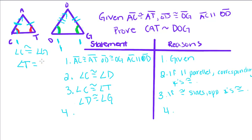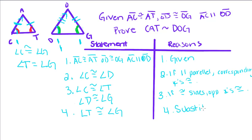And since angle C is congruent to angle T, we can also say that angle T is congruent to angle G. It's convoluted but completely mathematically legal. Our reason is substitution.